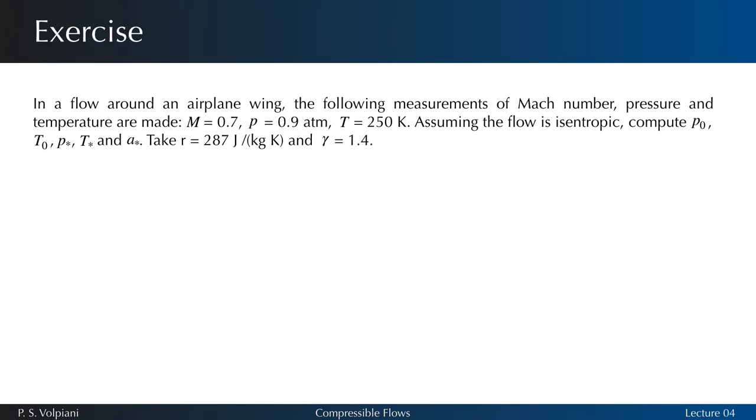Now let's do a simple exercise. In a flow around an airplane wing, the following measurements of Mach number, pressure, and temperature are made. Assuming the flow is isentropic, compute p0, T0, p star, T star, and a star.